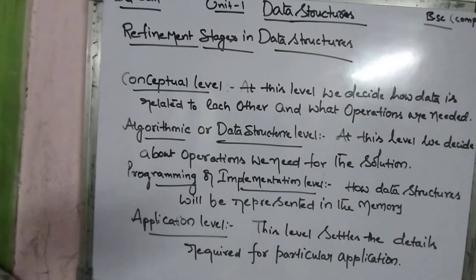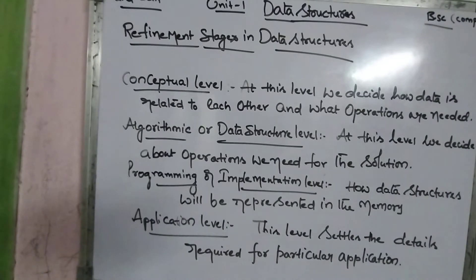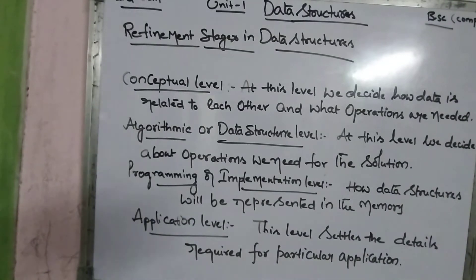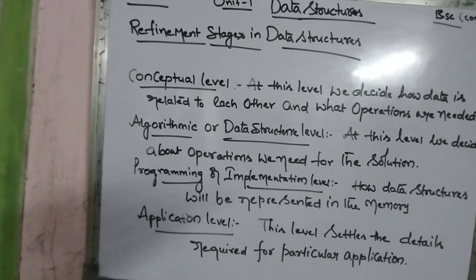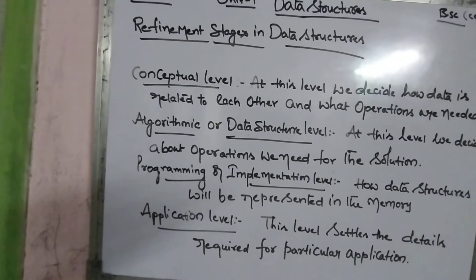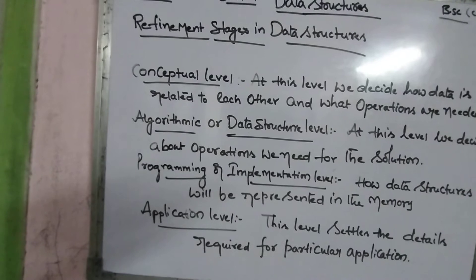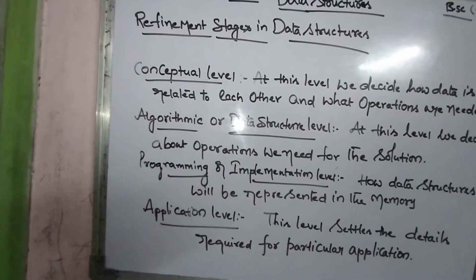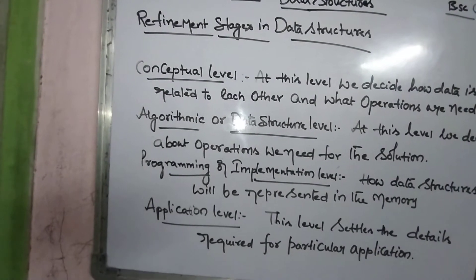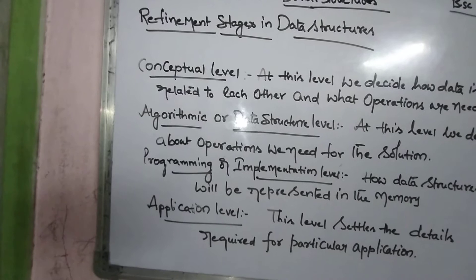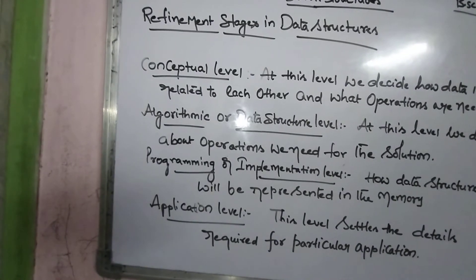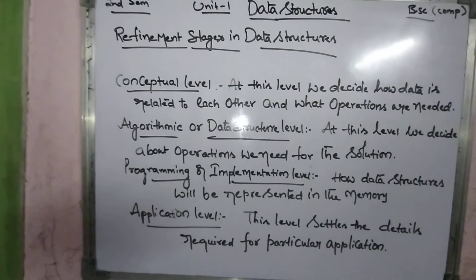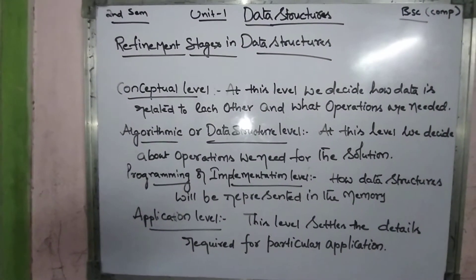Our next topic is refinement stages in data structures. In this refinement stages we are having four types. Refinement stage is nothing but the top down approach of a program. Whenever we create a program, it must be a top down approach.